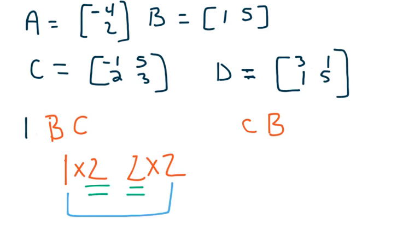C is a two by two. And B is a one by two. Okay, so C was a two by two, B is a one by two.